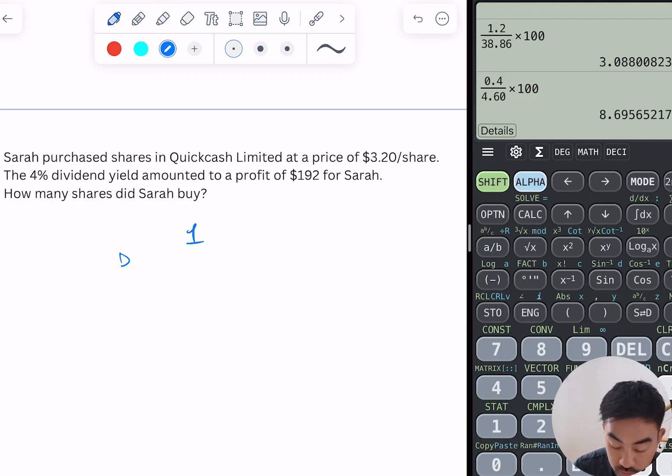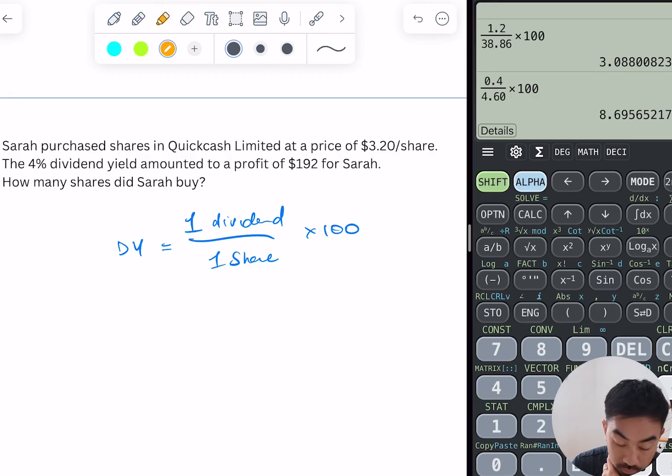Let me just start with the formula, so it's one—so dividend yield is one share, or one dividend, sorry, divided by one share times 100. I'm just gonna work out what I've got. So I've got the dividend yield which is 4% here, I've got the value of one share, so that should let me find what the value of one dividend is.